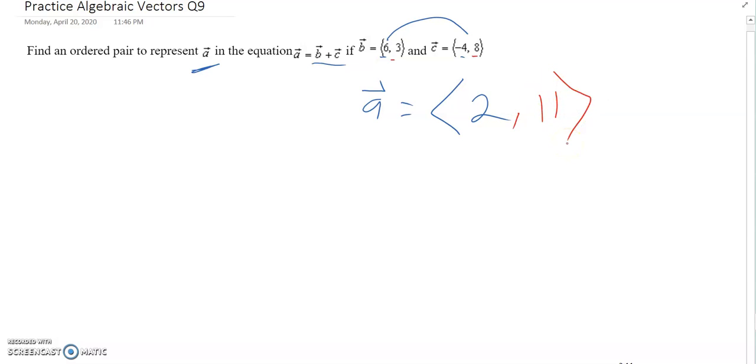And for the Y values, 3 plus 8, since we are adding them, should equal 11. And well, that was easy. Ordered pair, well that was real easy, actually. We got our ordered pair. We don't even have to find any magnitude or anything.